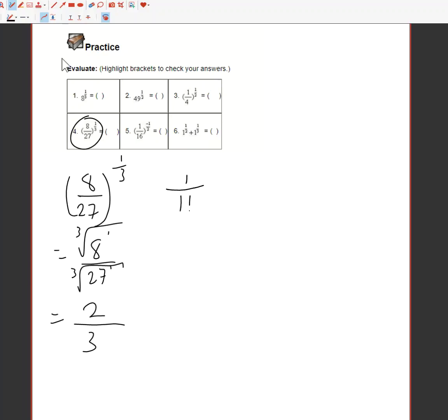So 1 16th to the negative 1 half. Again, let's do a little bit at a time. So the negative just means my fraction could be reversed if I want to. 16 over 1 to the positive 1 half. The negative just means I can flip the fraction if I want to.